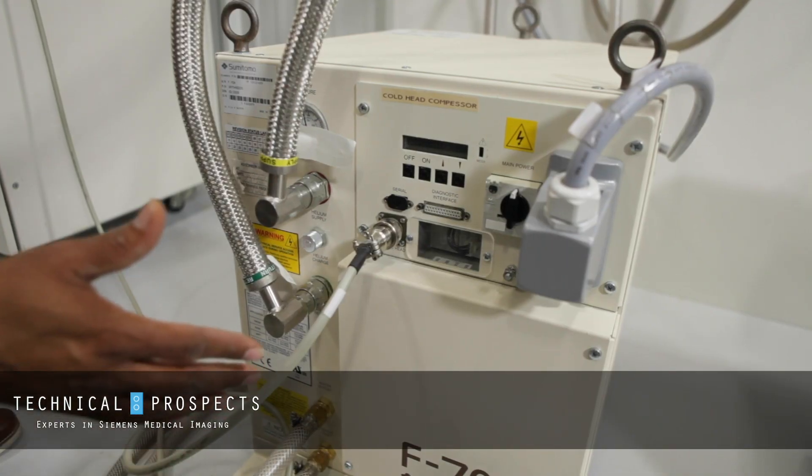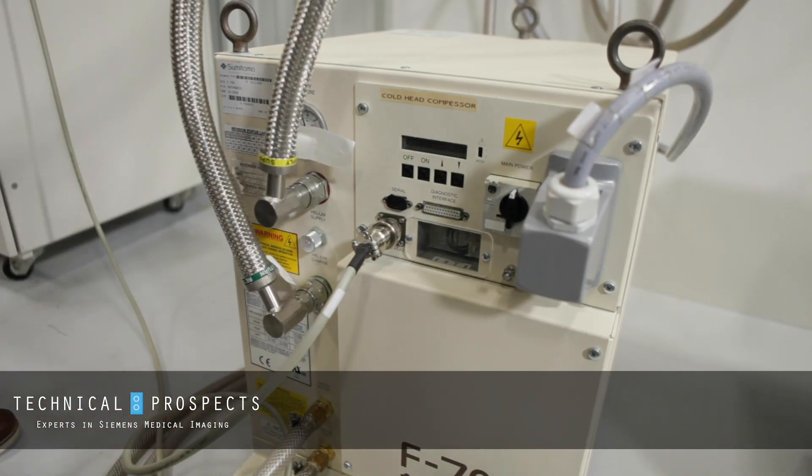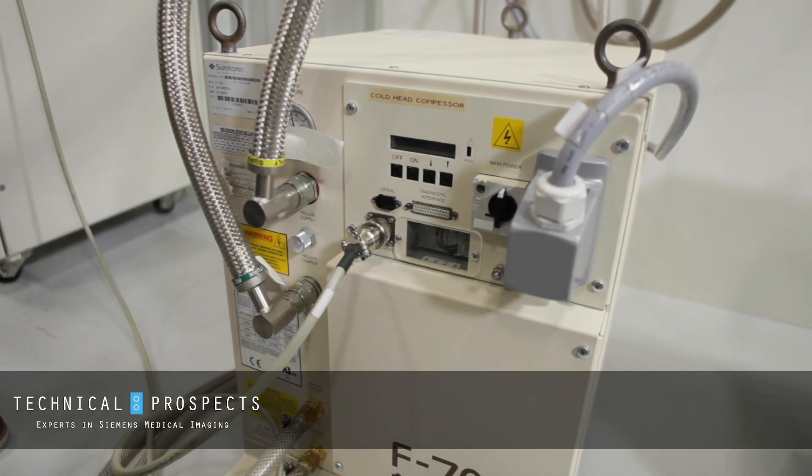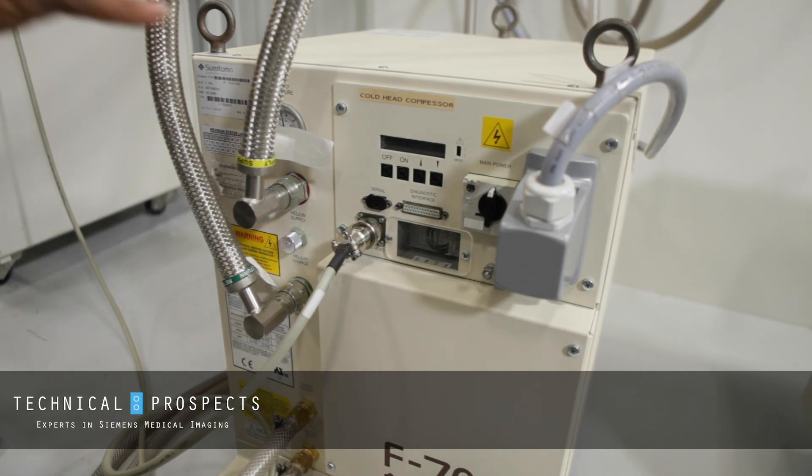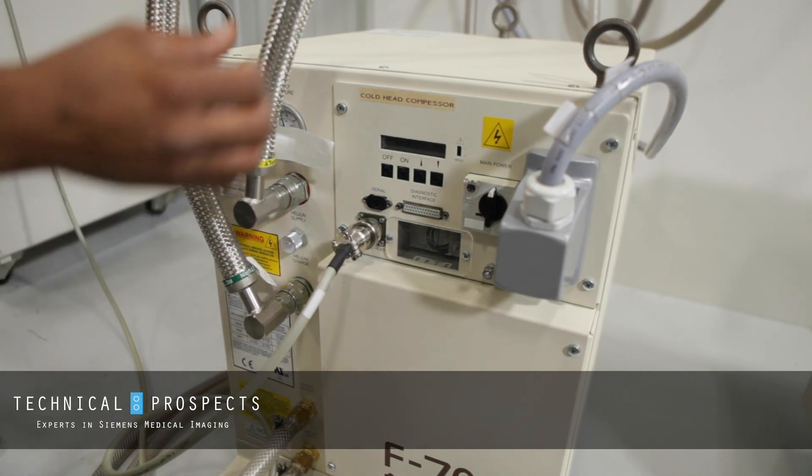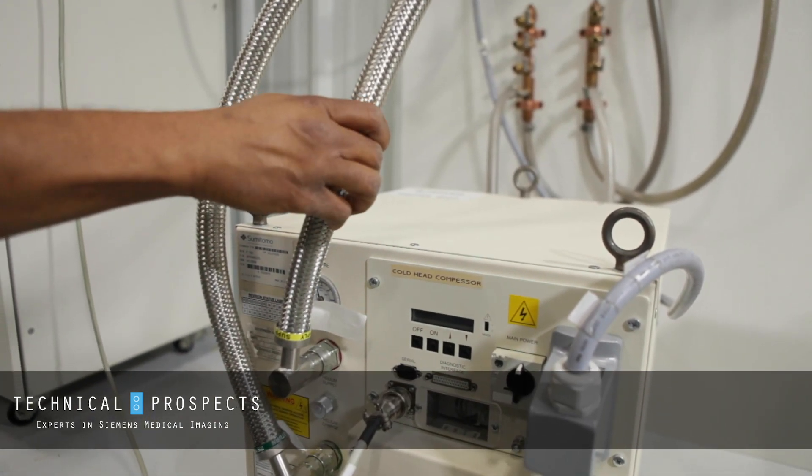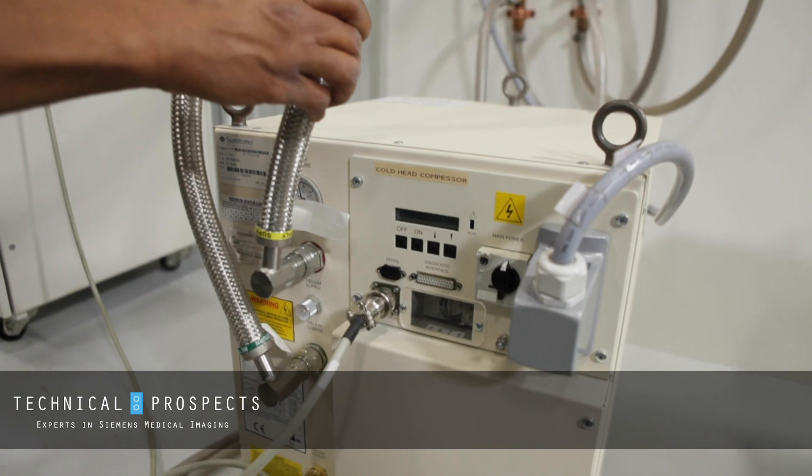With the F70 compressor, as I stated, you must replace the absorber every two years. And also if your timer reaches 20,000 hours before that two years, you must replace the absorber at that point, because these lines can become contaminated. If they become contaminated, we'll start having trouble with our magnet cooling system.